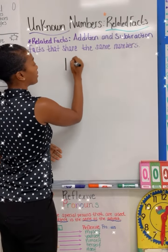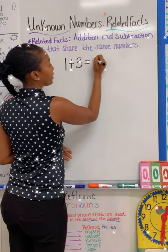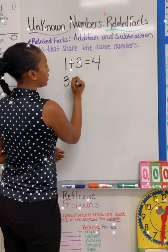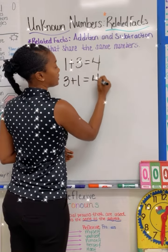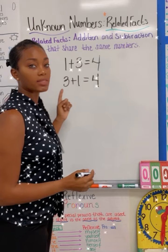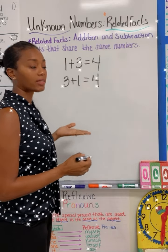If I have a number, one plus three is equal to four, that means that three plus one is equal to four. If you notice in this set of numbers, they all share a relationship or a connection.